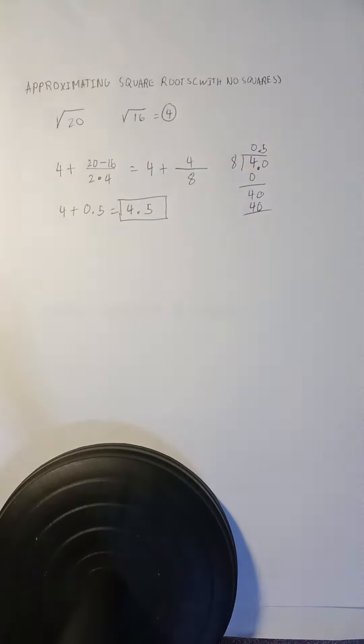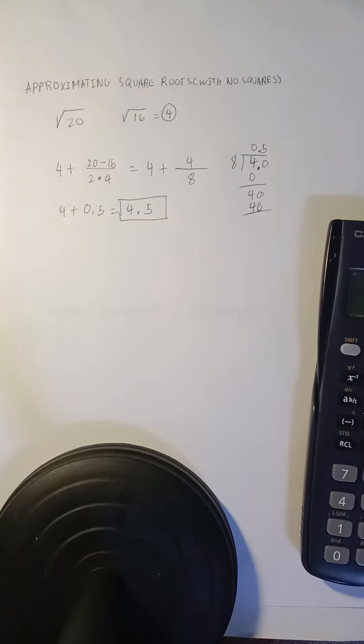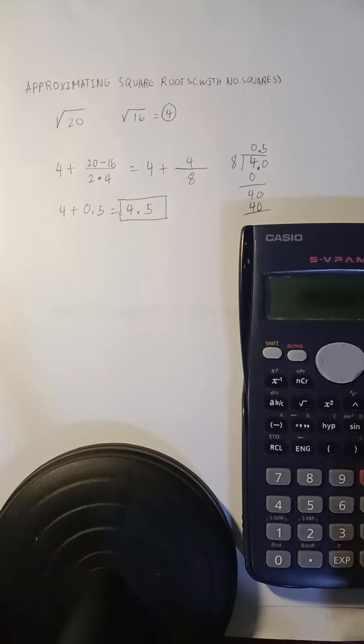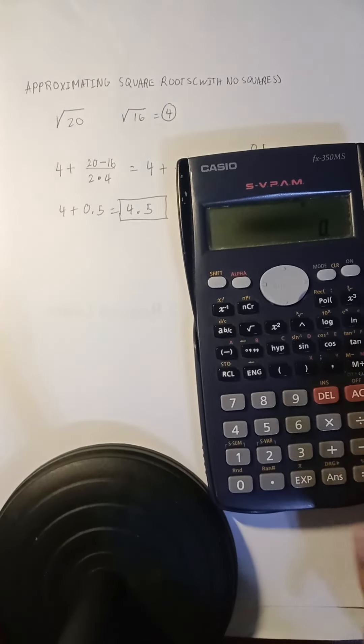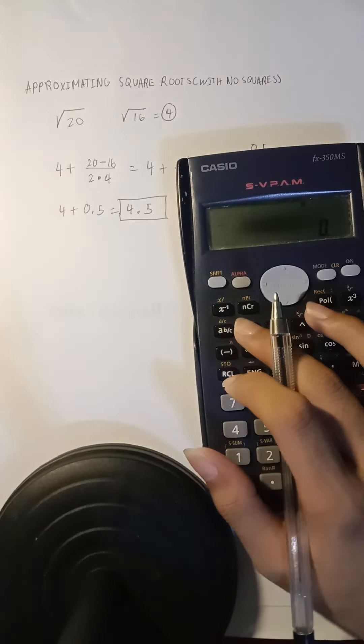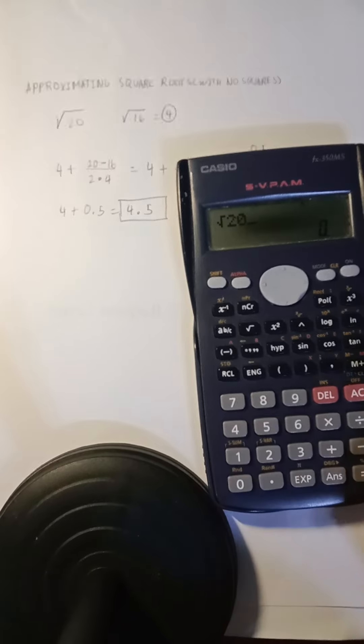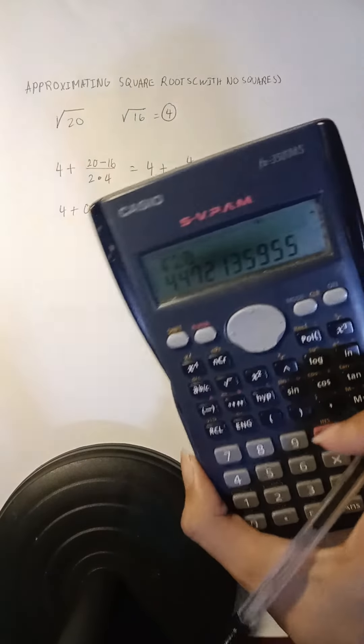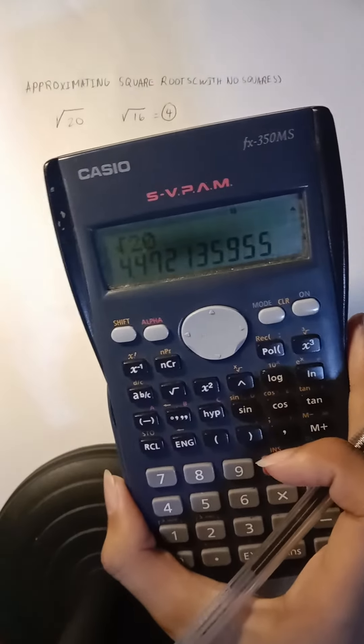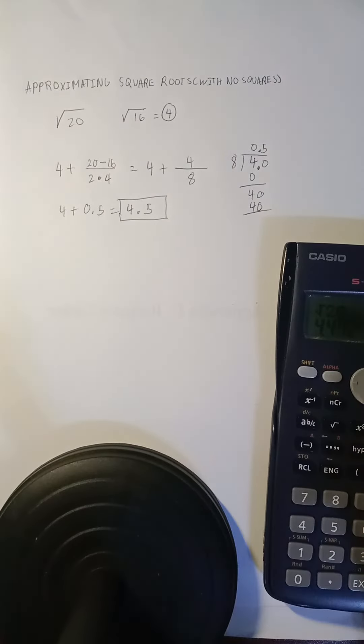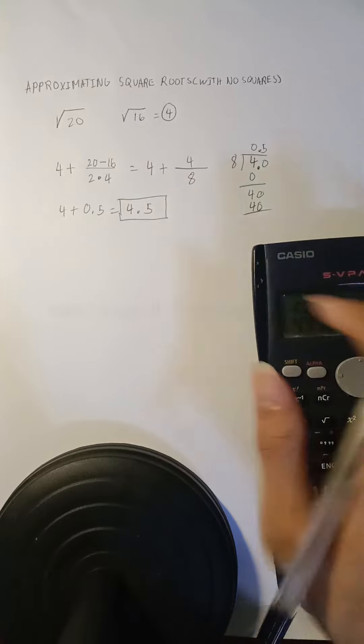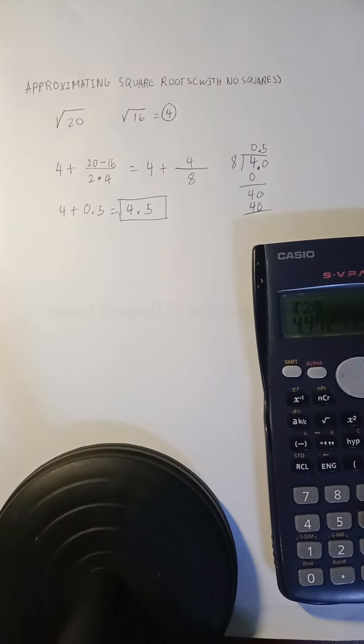And that's how you approximate non-perfect square roots. So let's try it on a calculator. If we calculate square root of 20, let's see. We have here 4.47, in which if we round it off to one decimal place, we will have 4.5. So that's how you approximate non-perfect square roots.